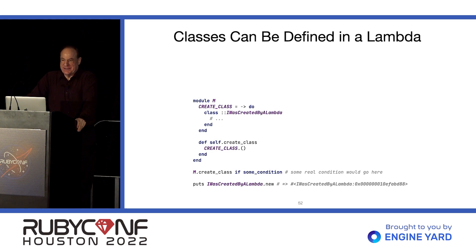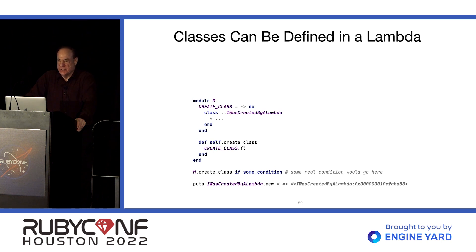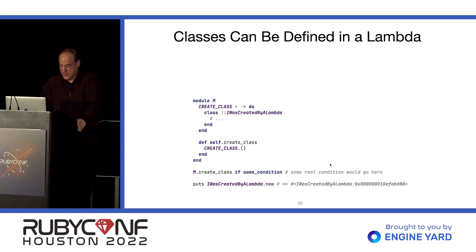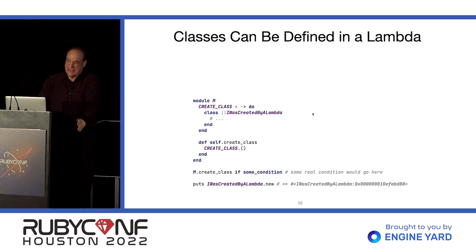Here's a really interesting thing: you can define a class in a lambda using the conventional class definition notation. You could define a class in a method using define_class and define_method, but if you wanted it to look like a conventional class definition you could do that in a lambda, as long as that lambda is not defined inside a method. Here we create a lambda assigned to a class constant, and if we have a method that calls the lambda, it works. I'm not sure if that's useful, but I thought it was fascinating.